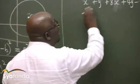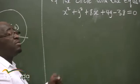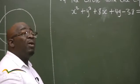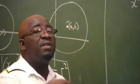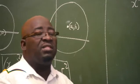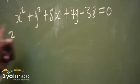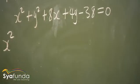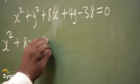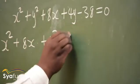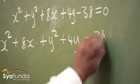Step number one: take all the constant terms and move them to the right-hand side. At the same time, arrange the x terms together and y terms together. So we'll have x squared plus 8x, then y squared plus 4y, equals 38. That's step number one.